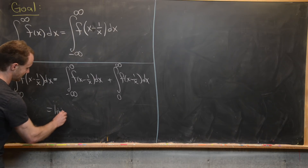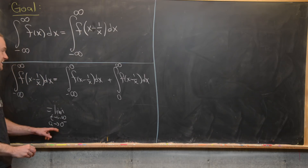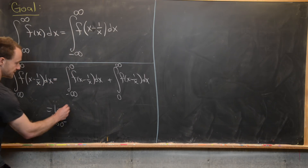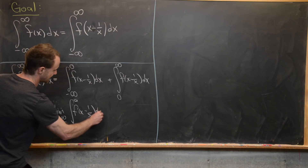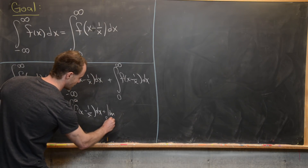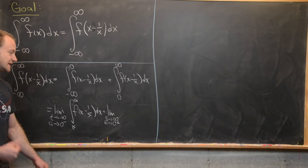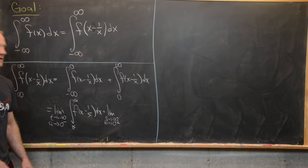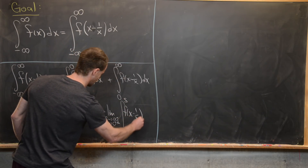Now we're going to recall the precise definition of these improper integrals involving limits. So this first one is the limit as t goes to minus infinity and a goes to zero from the left — this zero from the left is super important because we're going from numbers below zero — of the integral from t to a of f(x - 1/x) dx. Then plus the limit as s goes to infinity and b goes to zero from the right of the integral from b to s of f(x - 1/x) dx.